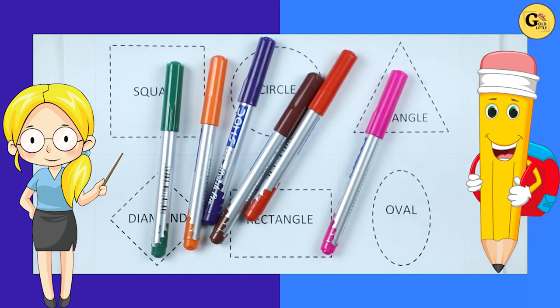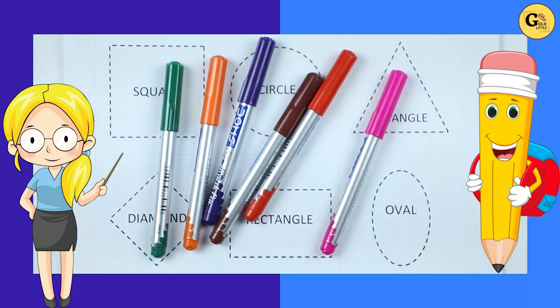Hello friends, today we learn shapes. Which shape is this? Square, circle, triangle, diamond, rectangle, oval.